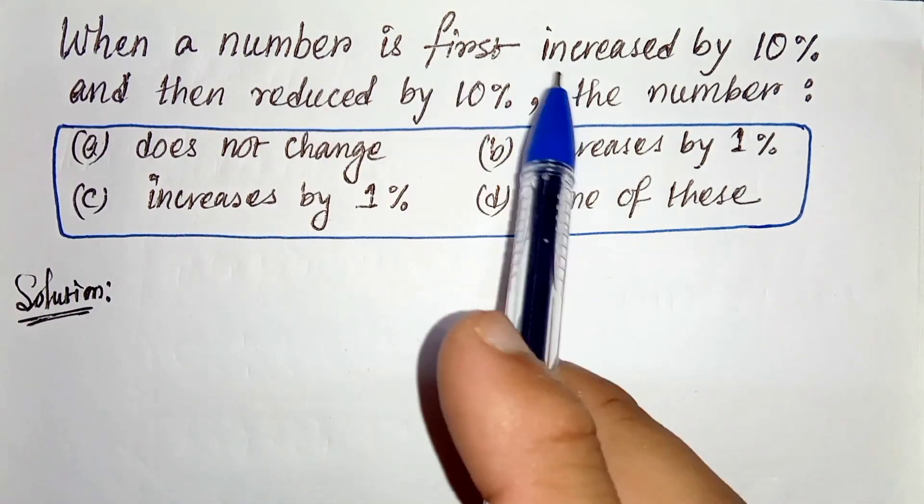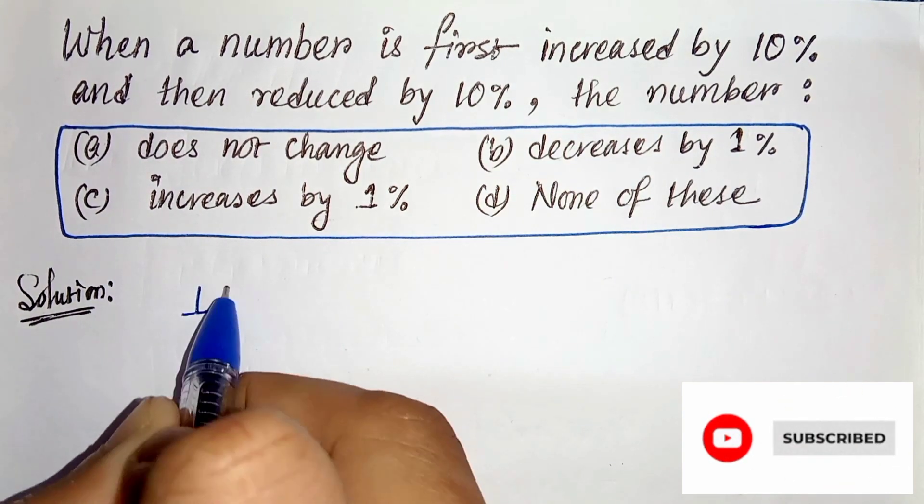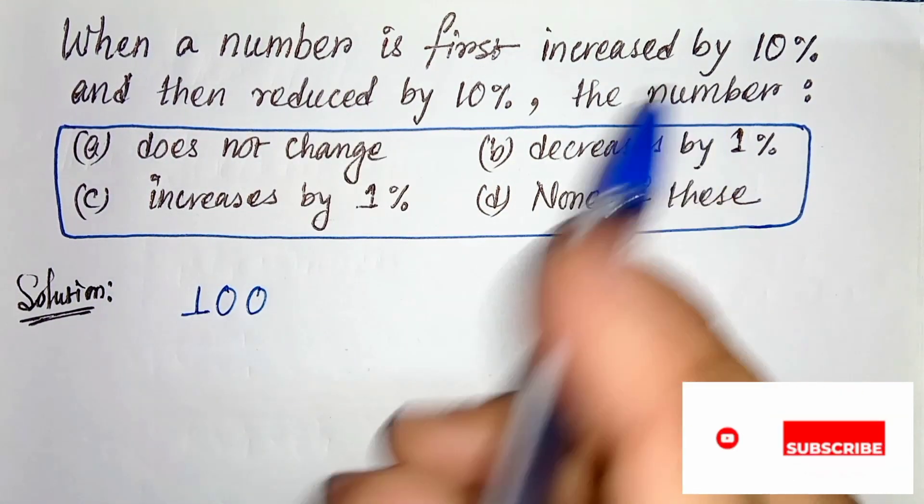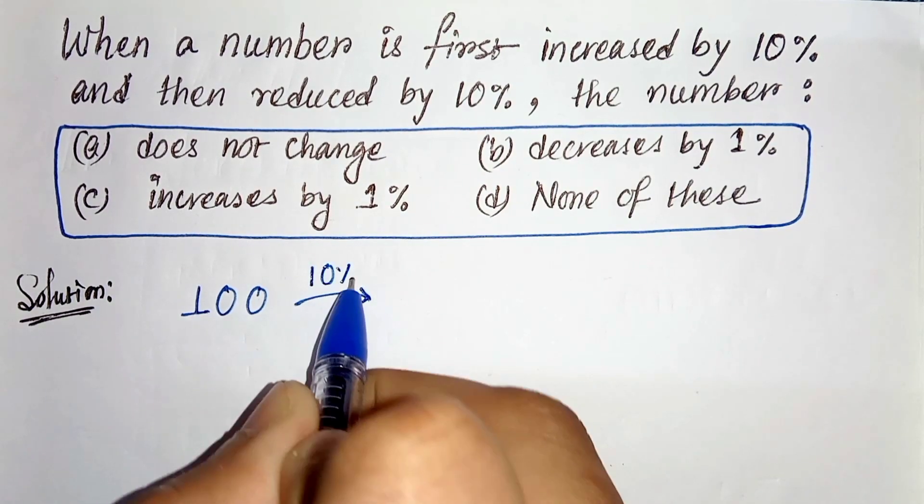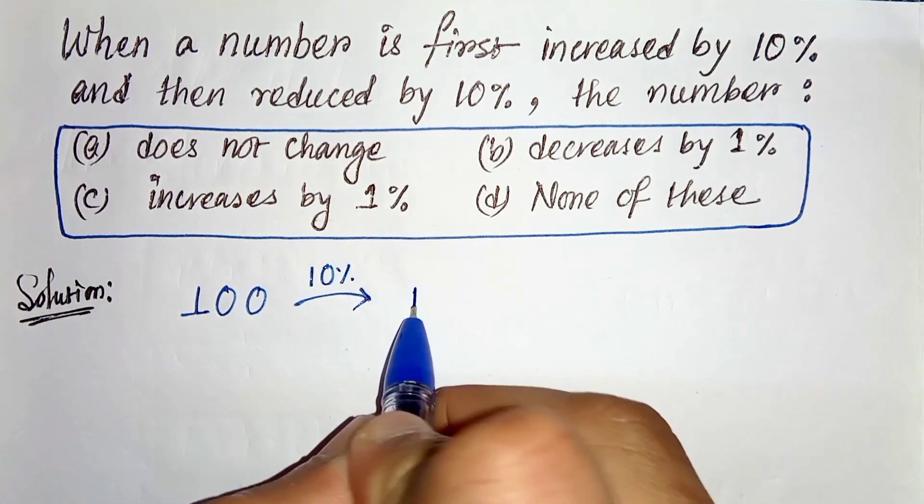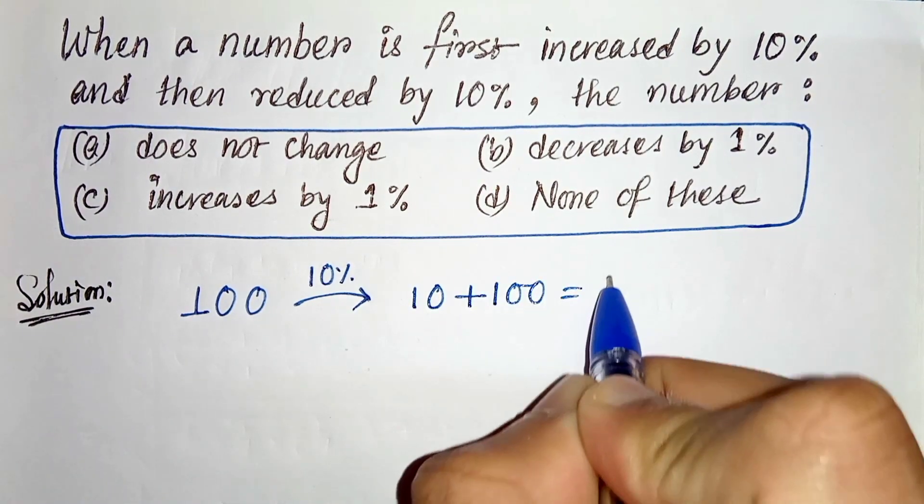When a number is first increased by 10%, let us consider the number 100 increased by 10%. So 10% of 100 is 10, so if we increase it then it will become 10 plus 100, that is 110.